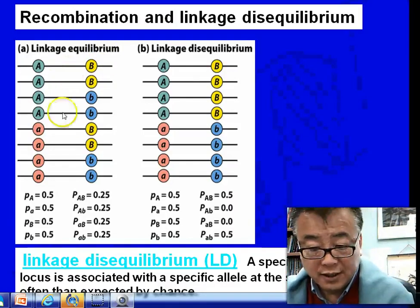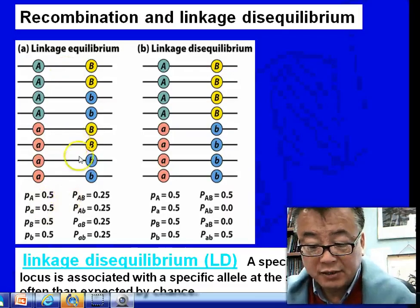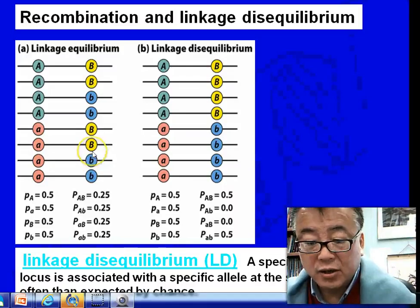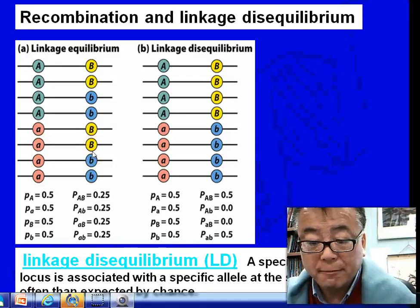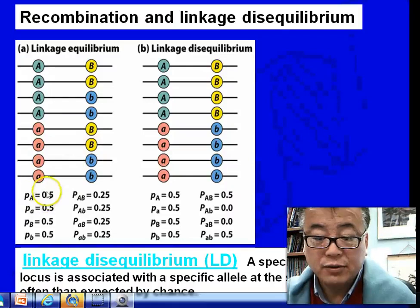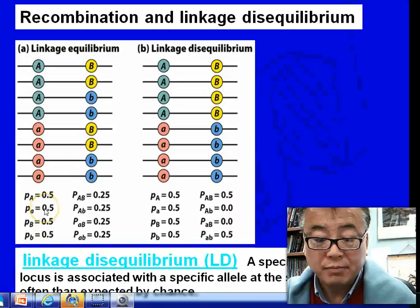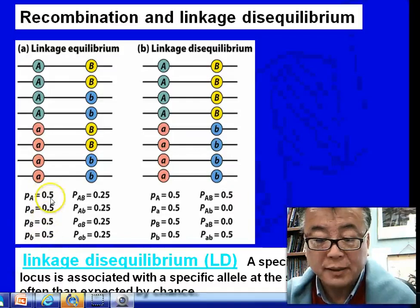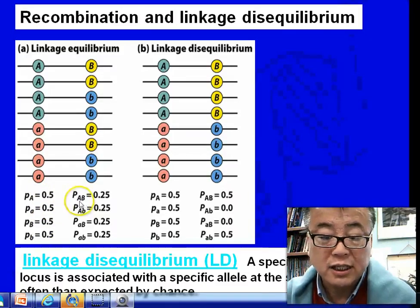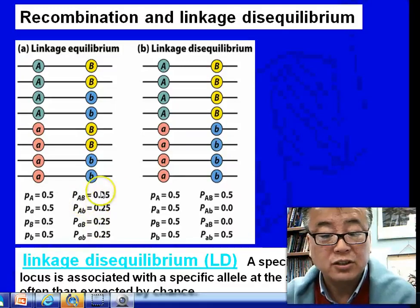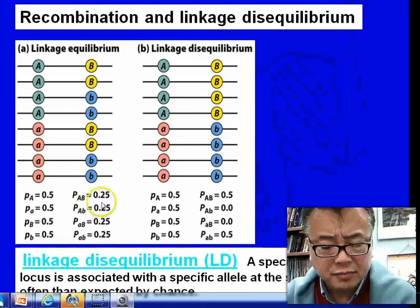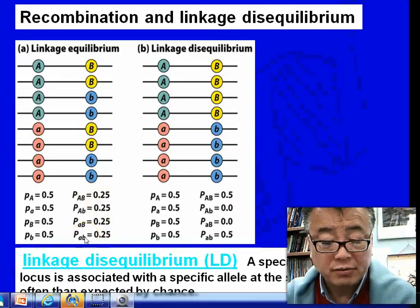it's referring to these alleles where a specific allele at the first locus is associated with a specific allele at the second locus with equal probabilities. You can see the allele frequency of A, if it's 0.5, then the small a frequency will also be 0.5. The bigger A and bigger B allele in the same linkage group have equal frequency.